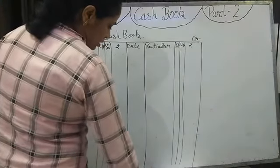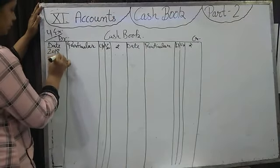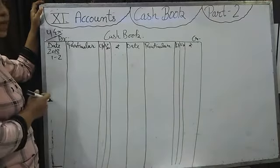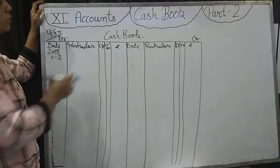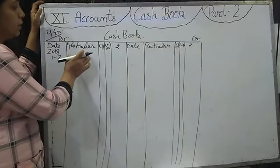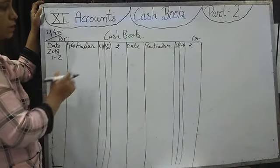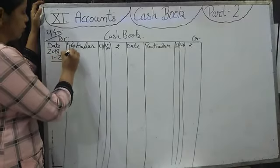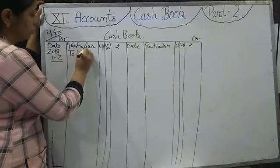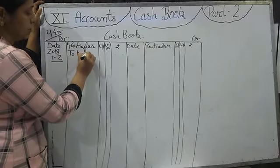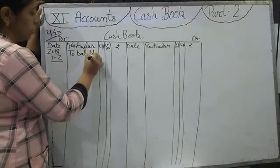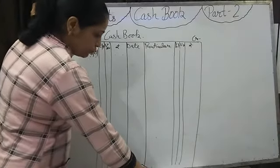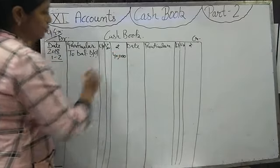The first transaction is dated 1st February 2018. Balance in hand is given — that is how much cash balance we are having. As I told you in part one, first we will write the balance of the previous month. We close the cash book every month and open a new one next month. While opening that new cash book, first we write the balance brought down — that is the previous month's balance — which is given as Rs. 40,000.